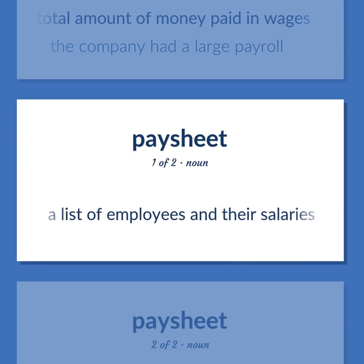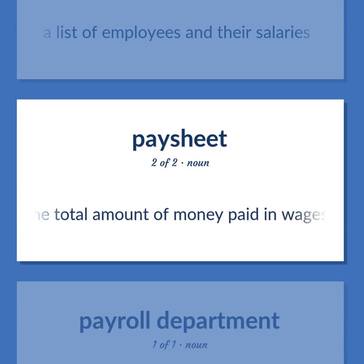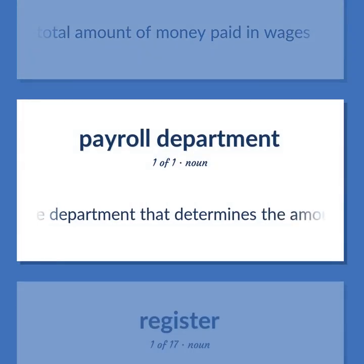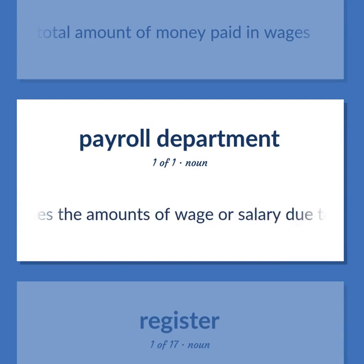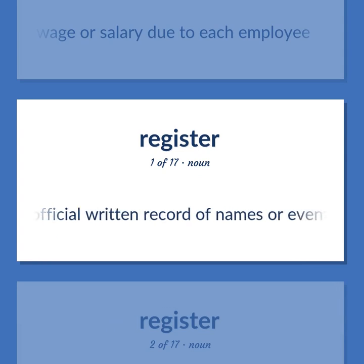A list of employees and their salaries. The total amount of money paid in wages. The department that determines the amounts of wage or salary due to each employee. An official written record of names or events or transactions.